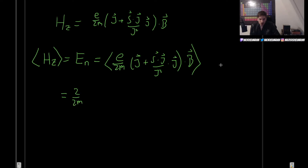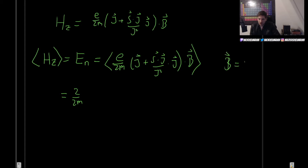Having chosen this direction, we now proceed to finding the expectation values. We can factor out J to the right, giving us 1 plus S dot J over J squared, all multiplied by J dot B. Since B and J are in the same direction, J dot B simplifies accordingly.